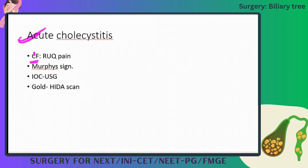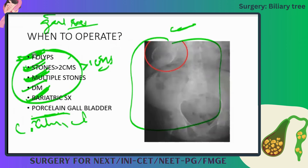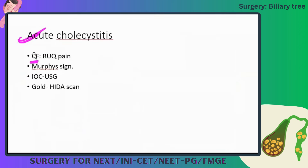Bariatric surgery is an indication for prophylactic cholecystectomy. There are two types of bariatric surgery — restrictive and malabsorptive. In malabsorptive procedures, there is a high chance the patient will develop gallstones in the future due to sluggishness of bile flow. Therefore, cholecystectomy is performed at the same time as bariatric surgery.